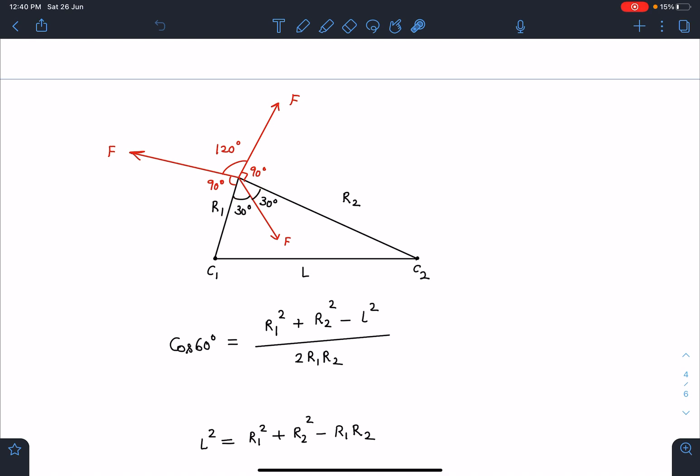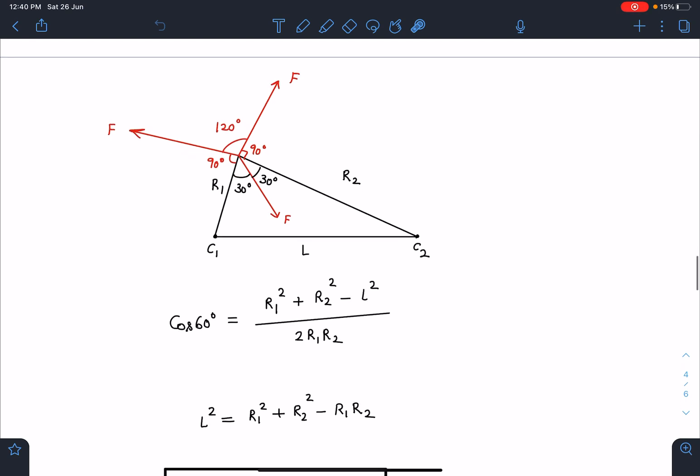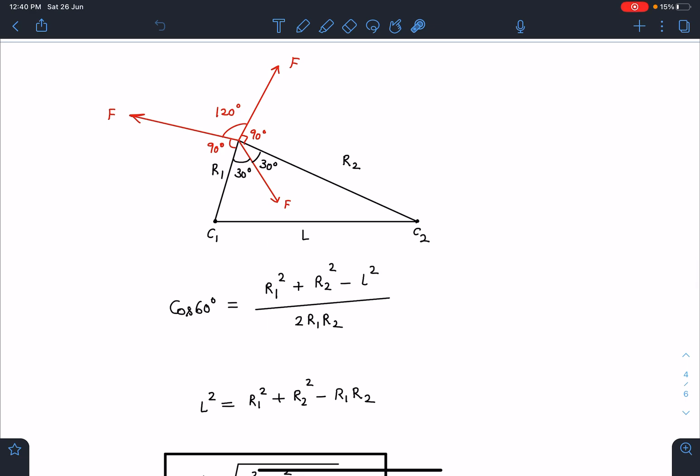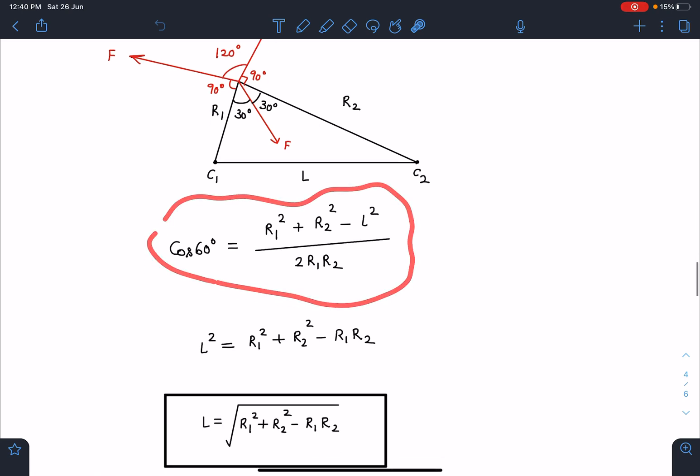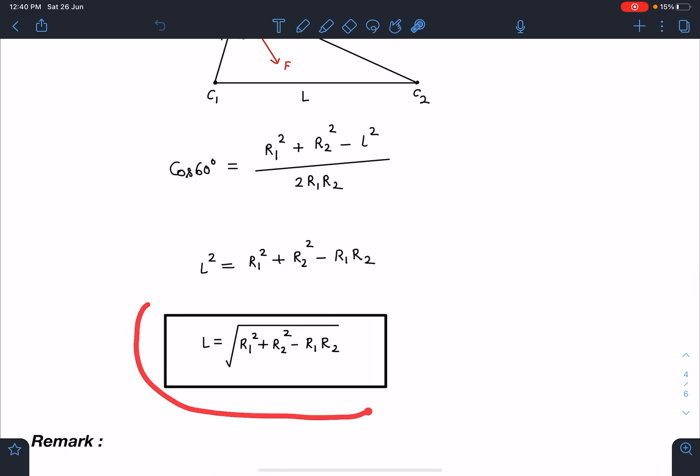So it's quite surprising also. Now calculation-wise it's very easy. Since this angle is 60 degrees, I can use the cosine rule in this triangle here. So cos 60 is equal to this square plus this square minus this square divided by 2ab, right, 2R1R2. So when I apply this and let's simplify, I am getting a general result here that is L is equal to root of R1 square plus R2 square minus R1R2.